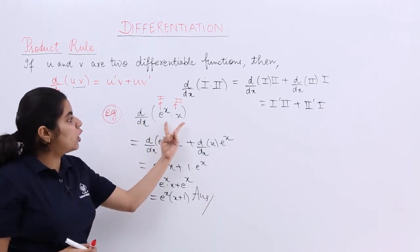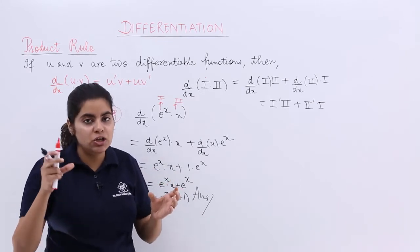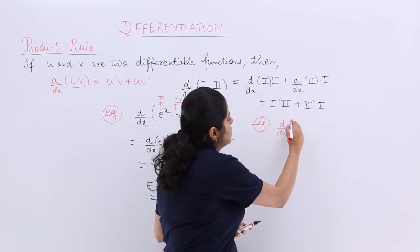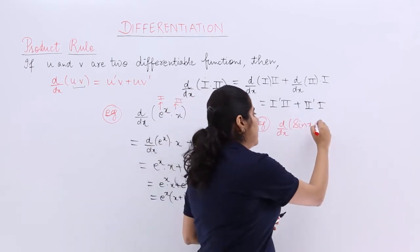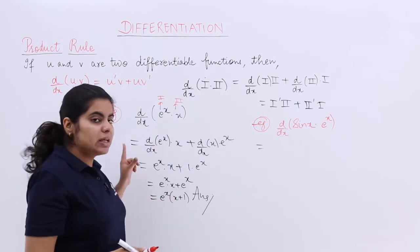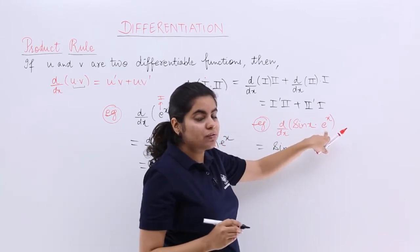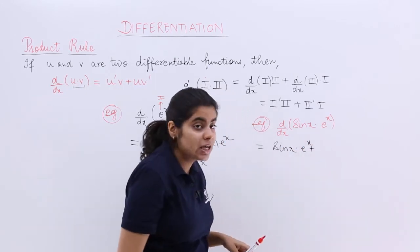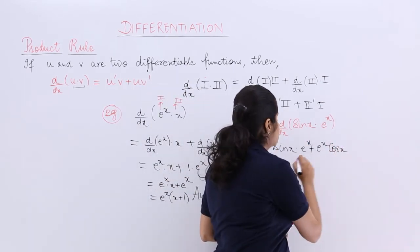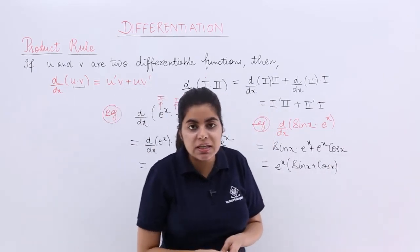Taking e^x as common, the answer is e^x(x + 1). So, when there are two product terms, differentiation is carried out using the Leibniz rule: first into differentiation of second, plus second into differentiation of first. Another example: differentiate sin(x) multiplied by e^x. Taking the first function sin(x) times differentiation of second (e^x), plus the second function e^x times differentiation of first (cos x). Taking e^x as common, the answer is e^x(sin x + cos x).